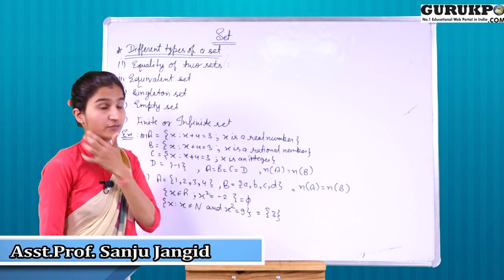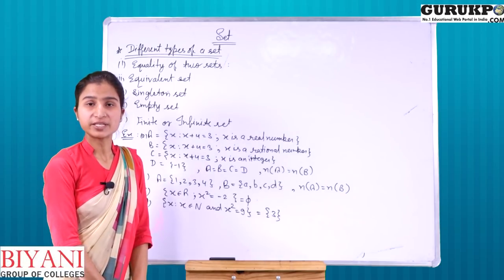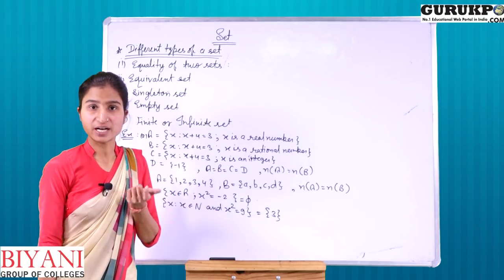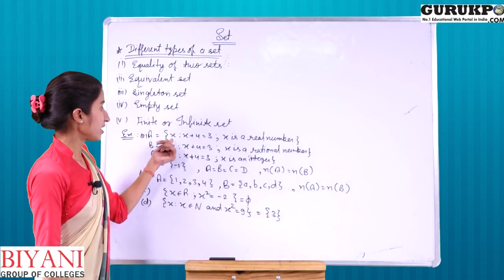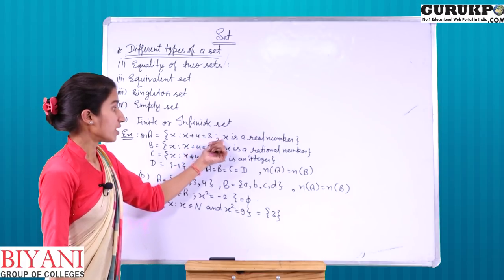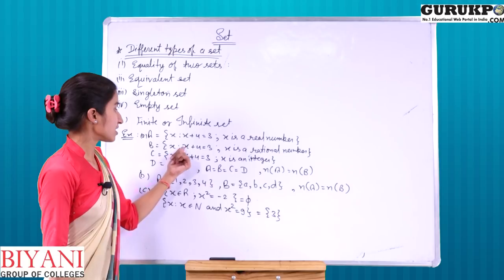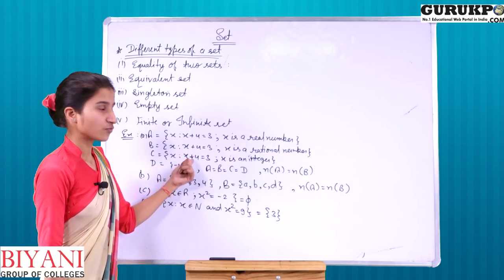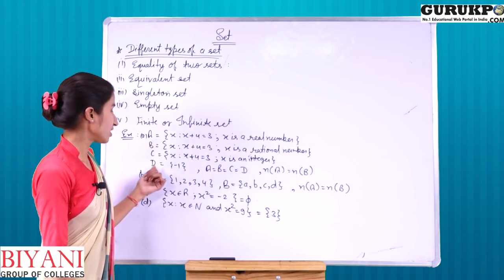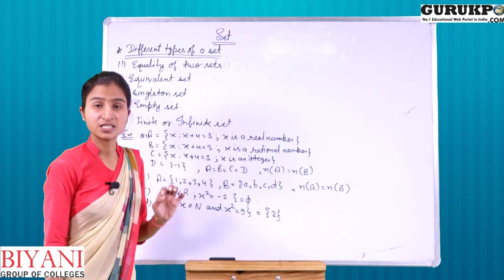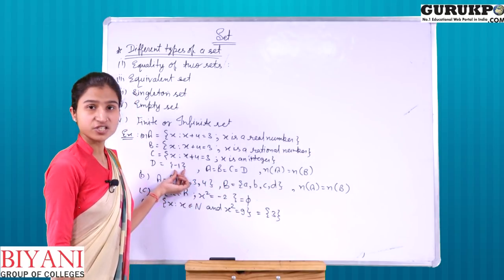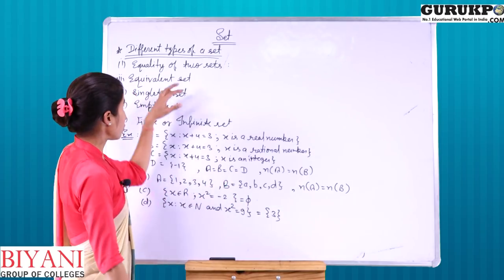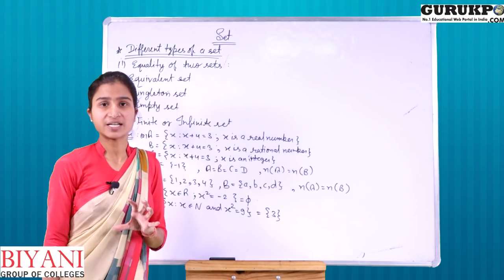Now we will learn different types of sets. First is the Equality of Two Sets. For two sets to be equal, the number of elements should be equal AND the elements should also be the same. For example: A = {X : X + 4 = 3, X ∈ ℝ}, B = {X : X + 4 = 3, X ∈ ℚ}, C = {X : X + 4 = 3, X ∈ ℤ}, and D = {−1}. Here A, B, C, D are all equal sets.